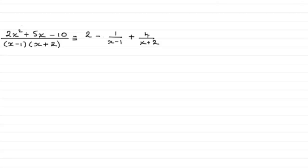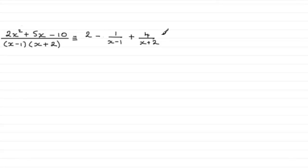For this part we are asked to expand up to the term in x squared, giving our coefficients in their simplest form. To do this we need to use the answer from the previous part. We found our constants a, b and c to be 2, minus 1 and 4 respectively. So we need to expand this expression using the binomial expansion.